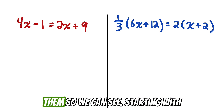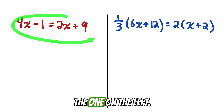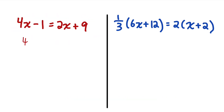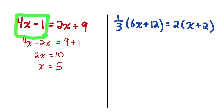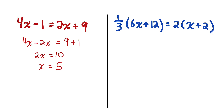Let me quickly solve each of them so we can see. Starting with the one on the left, if I brought my variable terms to the left and my constant terms to the right, I would see that 2x equals 10, meaning that x is equal to 5. Getting a single answer of x equals 5 means that is the only number that when substituted in for x makes the left side equal to the right side. Any other number substituted in for x, the two sides would not be equal. That means this equation is not an identity.